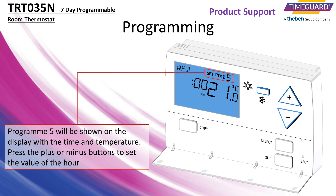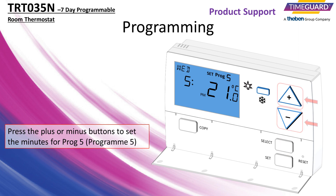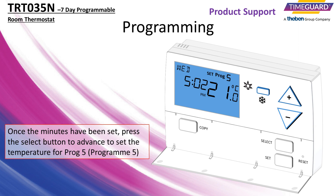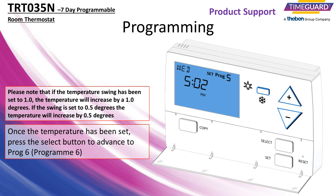Program 5 will be shown on the display with the time and temperature. Press the plus or minus buttons to set the value of the hour. Once the hour has been set, press the select button to advance to setting the minutes. Press the plus or minus buttons to set the minutes. Once the minutes have been set, press the select button to advance to set the temperature for program 5. The temperature will be blinking. Press the plus or minus buttons to amend the value of the temperature. Once the temperature has been set, press the select button to advance to program 6.